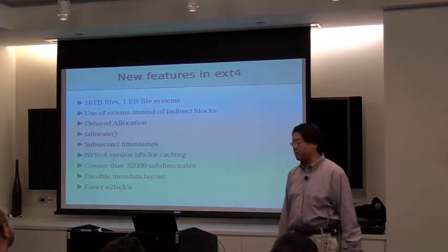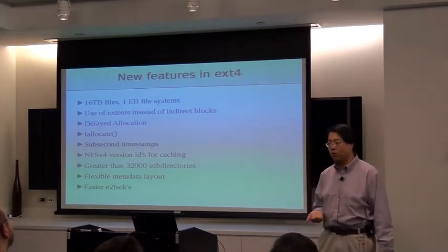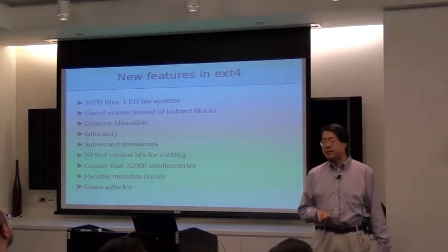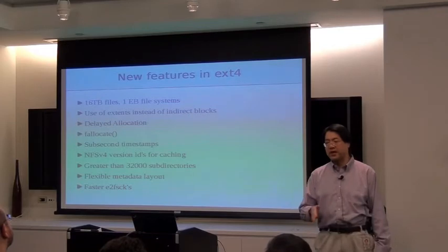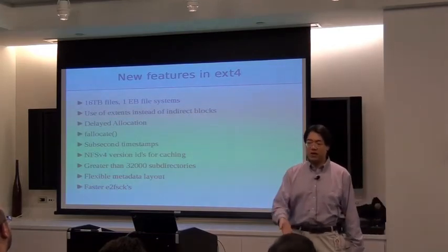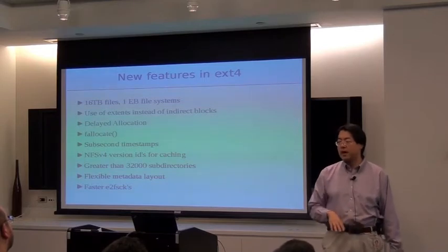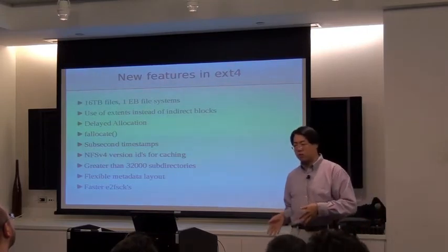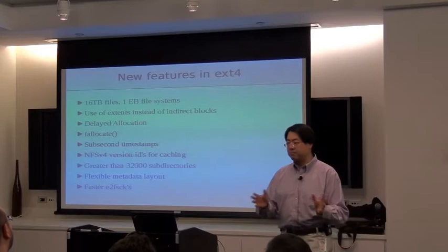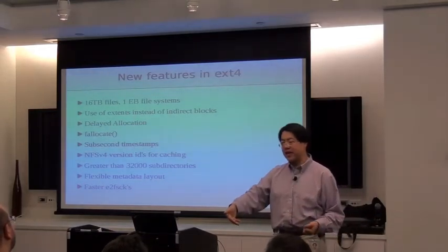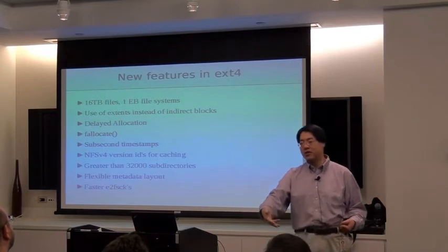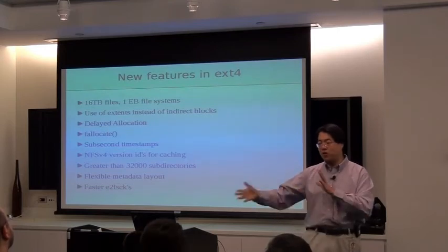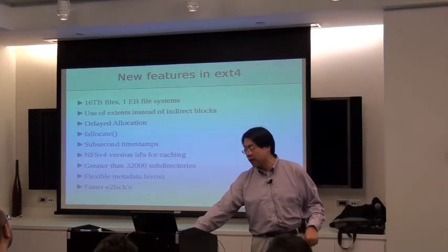A lot of these features combined cause FSCK for EXT4 file systems to get significantly faster — typically a factor of 7 to 12. I've seen file systems that used to take 45 minutes to FSCK now take about 4 to 5 minutes with EXT4, assuming a freshly-created EXT4 file system. If you take an EXT3 file system and convert it in place, you'll be a bit faster, but you won't see that spectacular improvement in FSCK times.